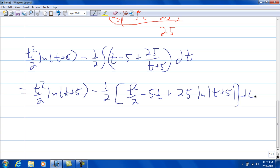And so, we'll play with this a little bit more just to move things around. We have t squared over 2, natural log of t plus 5, minus 1 half of t squared, let's call it 1 fourth of t squared.